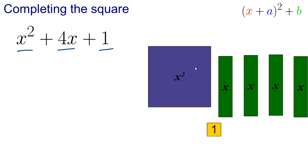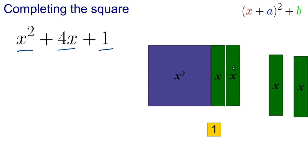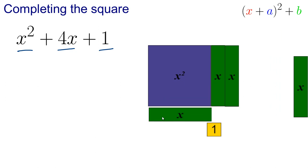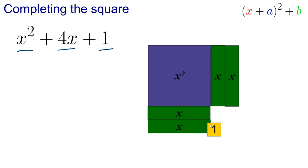So if I rearrange these, I'm going to put two of these x's alongside the x squared. I'm going to put two of them underneath, so we'll just exchange those for some x's the other orientation, so I've got 2 there, and then I'm going to put my 1 in here.